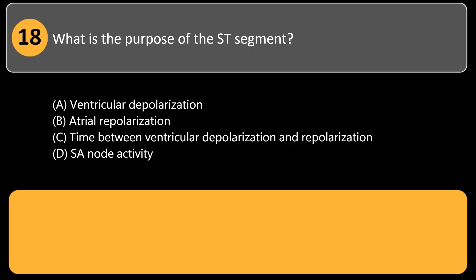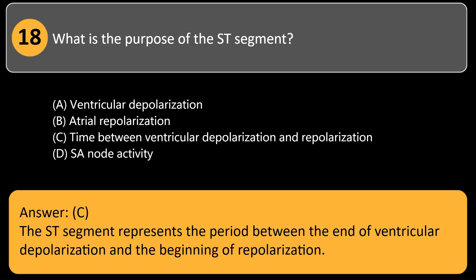What is the purpose of the ST segment? A. Ventricular depolarization. B. Atrial repolarization. C. Time between ventricular depolarization and repolarization. D. SA node activity. Answer: C. The ST segment represents the period between the end of ventricular depolarization and the beginning of repolarization.